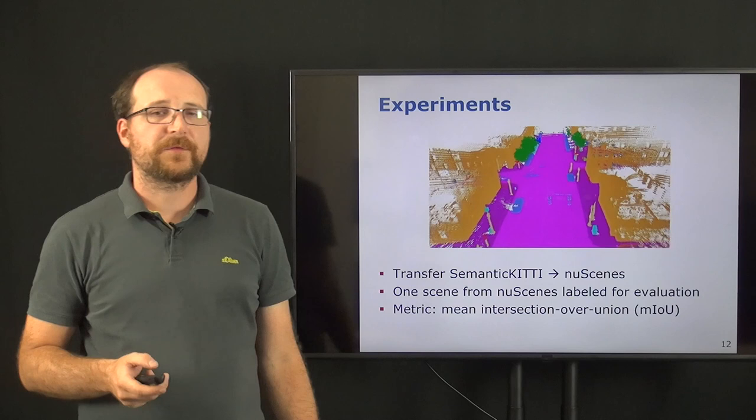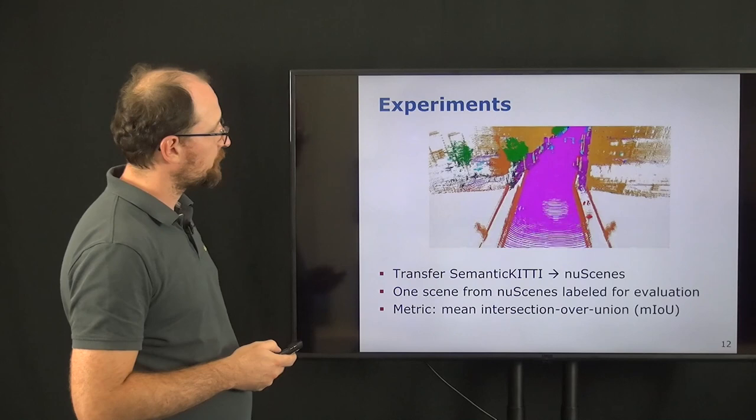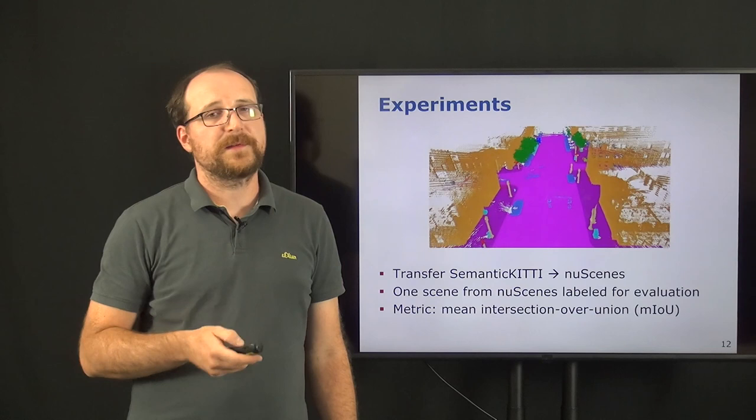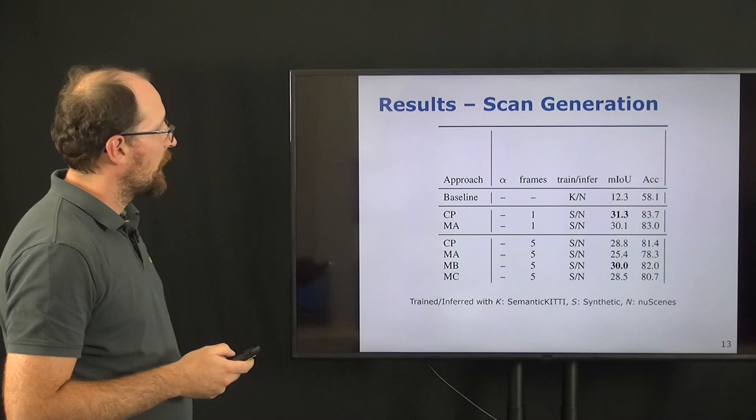We evaluated our approach now to transfer semantic labels from the semantic KITTI dataset to the NuScenes dataset. For this purpose, we labeled, as shown here, a complete scene from the NuScenes dataset. And important to notice here that we not use this label information in the process of learning this model. And for evaluation, we are using the mean intersection over union metric.